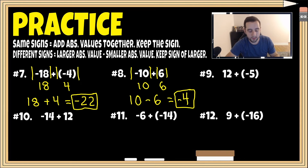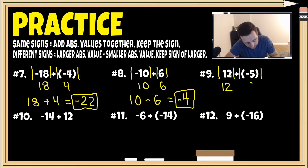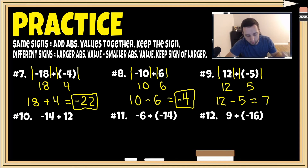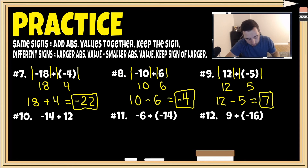For number nine, we again have different signs. The absolute value of 12 is 12, and the absolute value of five is five. We take the larger minus the smaller: 12 minus five is seven. Since 12 was originally positive, our final answer is also positive seven.